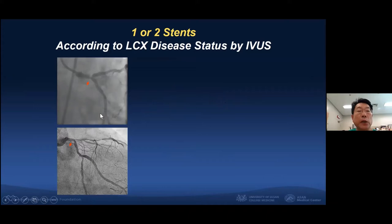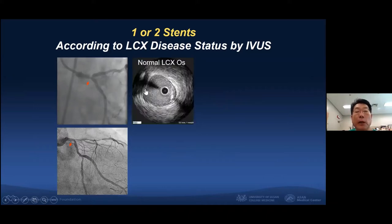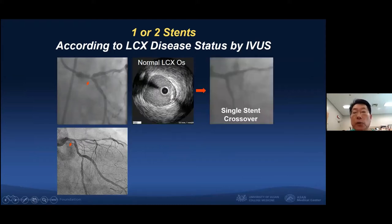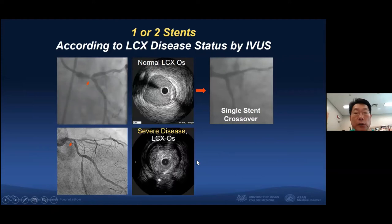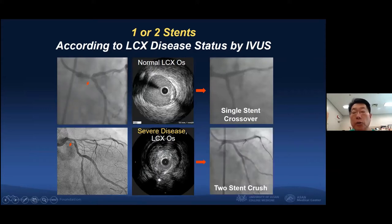The first case is angiographically a true bifurcation disease. However, IVUS findings clearly demonstrate a normal circumflex — the ostial part is free of disease. So we performed just a single-stent crossover. The second case is also angiographically bifurcation disease, but IVUS findings of the circumflex ostium showed clearly severe disease with large plaque burden, so we performed two-stent crush — with quite good angiographic results.